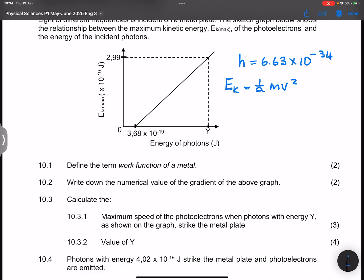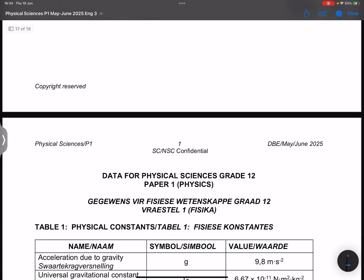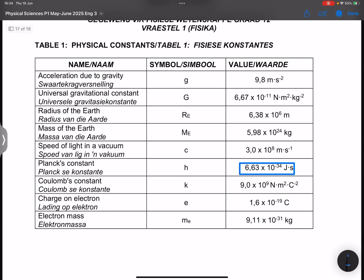So that's going to be 2.99 times 10 to the power minus 19, that's one over two. Now this mass here is the mass of an electron. Please note, once again, you are given the mass of an electron there, that's 9.11 times 10 to the power negative 31.